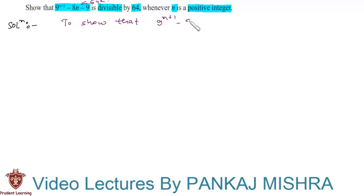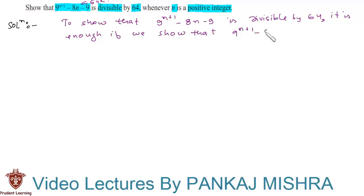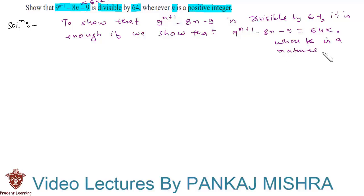So let us write this: to show that 9 raised to n plus 1, minus 8n, minus 9 is divisible by 64, it is enough if we show that 9 raised to n plus 1, minus 8n, minus 9 is equal to 64 times k, where k is a natural number.